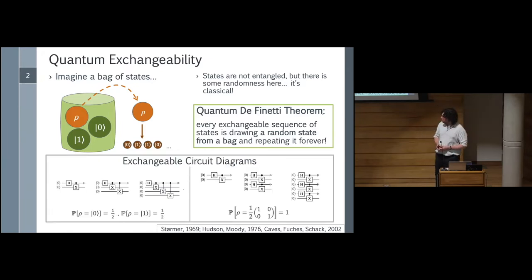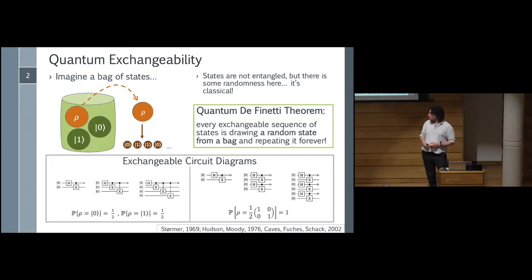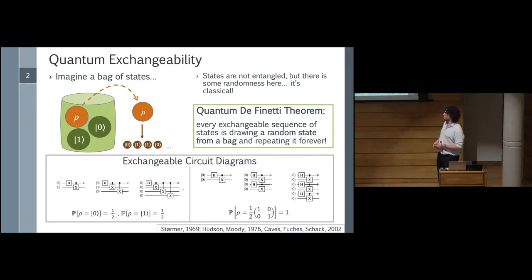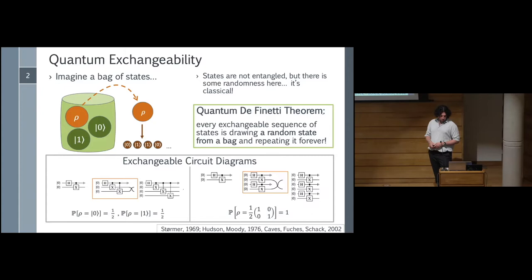The quantum de Finetti theorem says that an exchangeable sequence of states is, in a very similar way, like drawing from a bag. We have a measure over single states and then take a product of it with itself over and over again, separately. Another way of thinking about this is through circuit diagrams. The first example relies entirely on classical randomness — we have a certain result at each wire dependent on what happens at the beginning. On the other hand, the right-hand diagram has quantum randomness at every stage: each wire has a mixed state, completely disconnected from the others but with the same density matrix. It's exchangeable because we can swap the wires and get exactly the same thing.